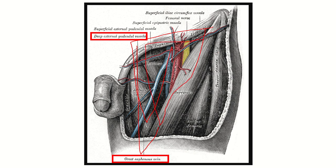Here is the femoral triangle, and the different structures within it — such as the femoral vein, femoral artery, and femoral nerve. Here we can see the femoral artery, and this vein draining here is the great saphenous vein. We can see an artery which passes below the great saphenous vein, and this artery is the external pudendal vessels — the external pudendal artery or deep external pudendal artery.